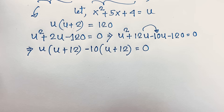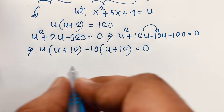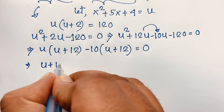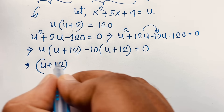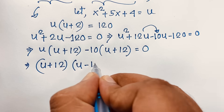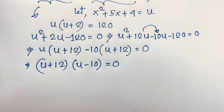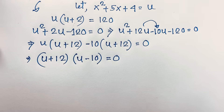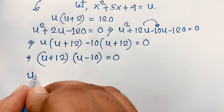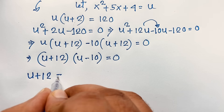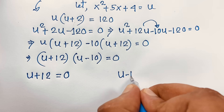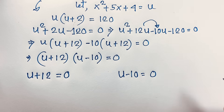Factoring out (u + 12): (u + 12)(u - 10) = 0. So we have two cases: u + 12 = 0 or u - 10 = 0.